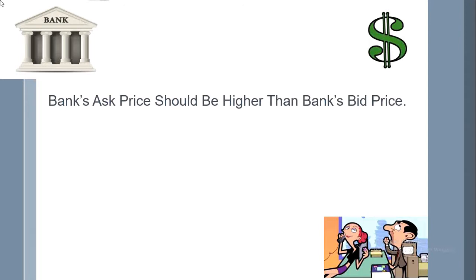After one month, you come back from the USA to Bangladesh. Now you have to convert USD into Bangladeshi currency. This time you see that you are getting 80 taka per USD. So there is a two taka gap, meaning the bank's selling price is always higher than the bank's buying price.